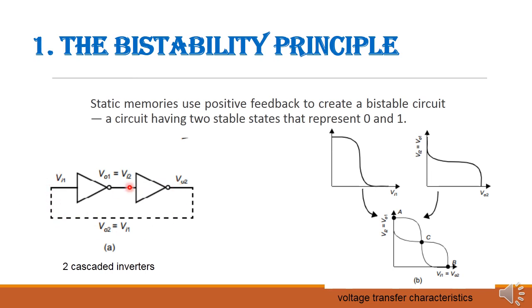Now let us see the voltage transfer characteristics of these inverters. First, we look at the voltage transfer characteristics of the first inverter, then the second inverter's voltage transfer characteristics. If you combine these two graphs, we get three points: A, C, and B. Here A and B are stable points and C is the unstable point, giving us two stable states.